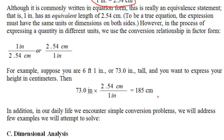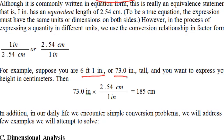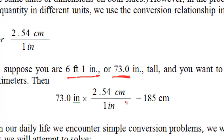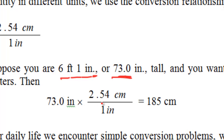For example, if someone is 6 foot 1 inch tall, which is equivalent to 73 inches, you can convert their height from inches to centimeters by multiplying by the conversion factor with inches in the denominator and centimeters in the numerator. Plugging in the numbers — 1 inch is 2.54 centimeters — inches cancel out, giving 73 times 2.54 centimeters divided by 1, which yields 185 centimeters.